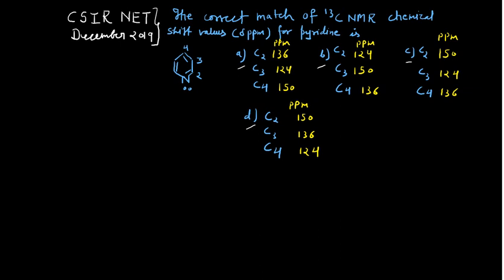The question is worth two marks. To write the correct chemical shift, you have to draw the resonance structures for pyridine. I am drawing the resonance structures and putting the positive and negative charges where required based on the movement of electrons. This is the original structure of pyridine — it is a heterocyclic compound.